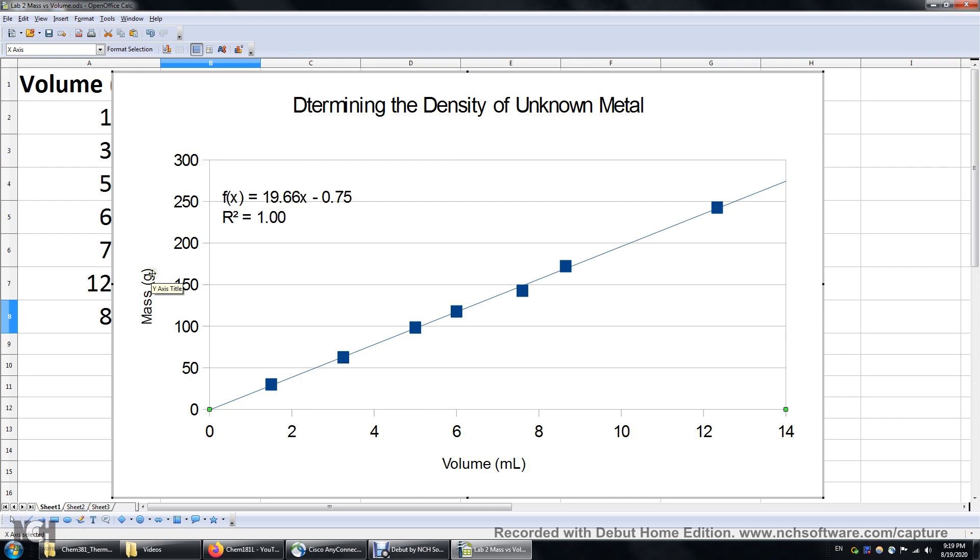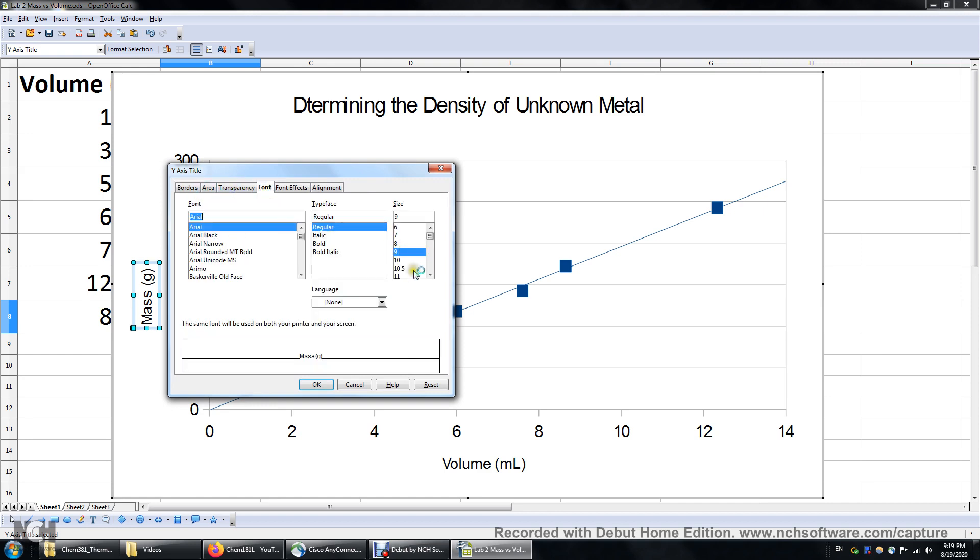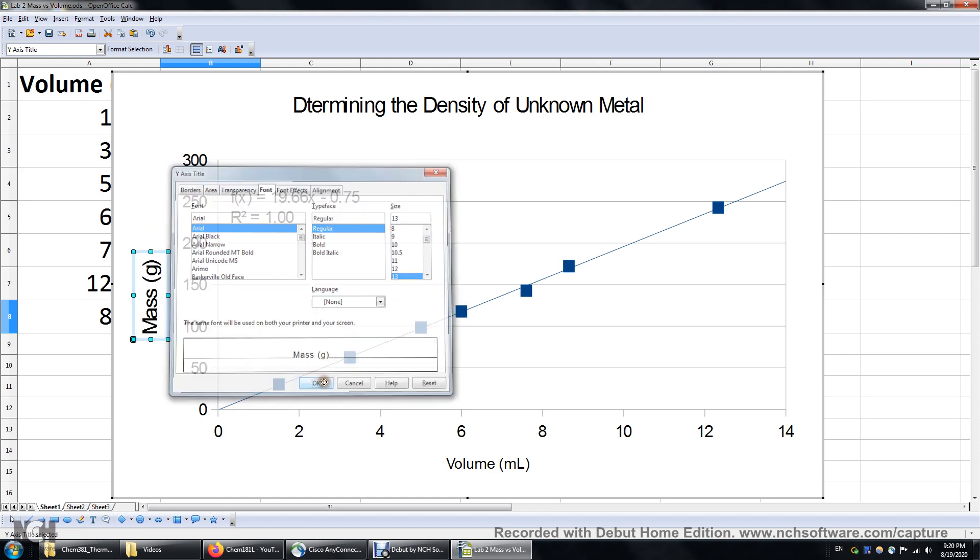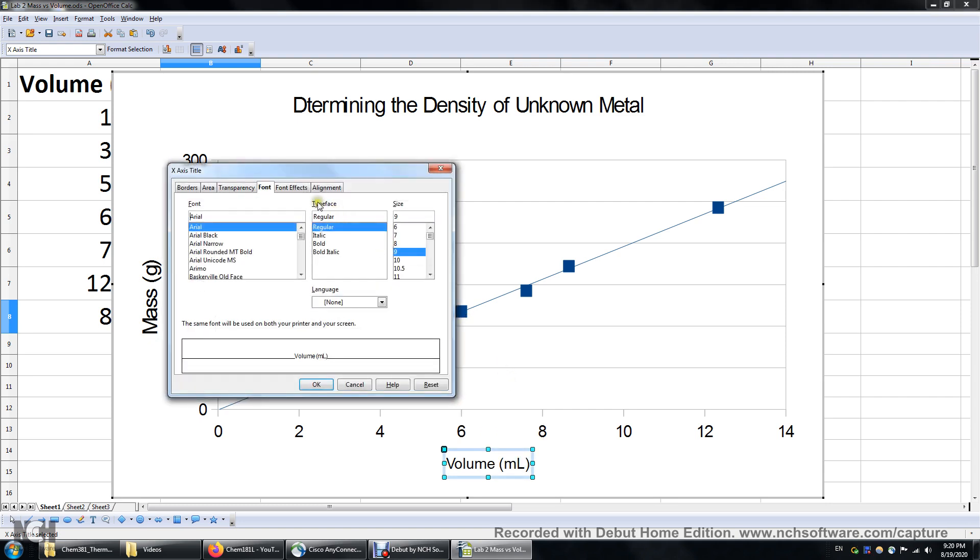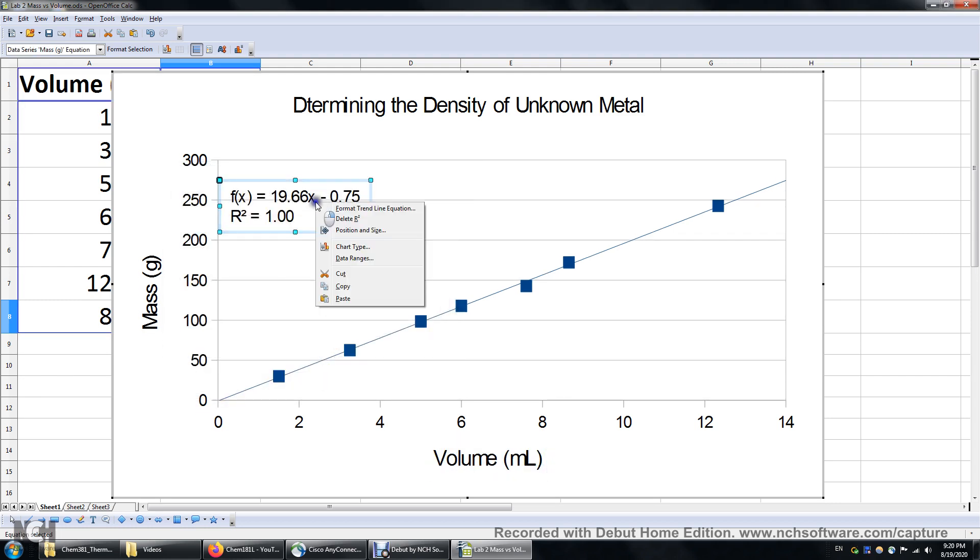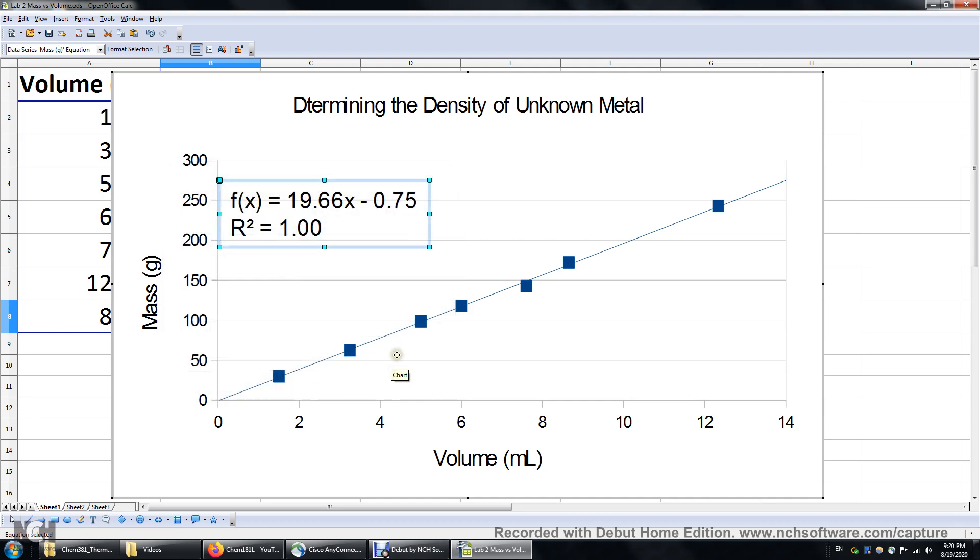And also you can change the font size if you want to. Just right click and format. We have area. We can change the font size. We'll change it to maybe 13. So this looks bigger. We can do this one as well. Font size 13, 14. And then the trend line, right click, format the equation, and maybe 14. So now it looks better.